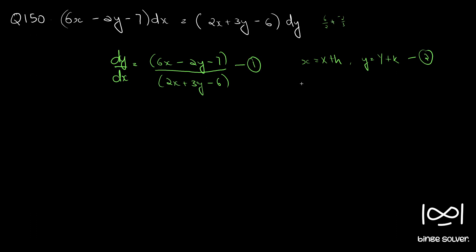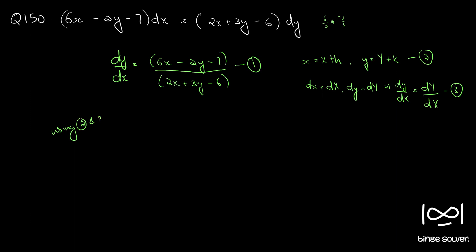Differentiating equation 2, we have dx equal to d capital X and dy equal to d capital Y. Therefore dy by dx equal to d capital Y by d capital X. Now using equations 2 and 3 in equation 1.